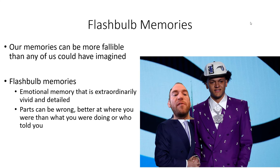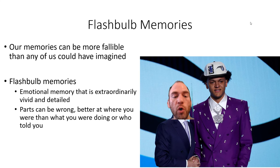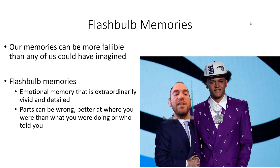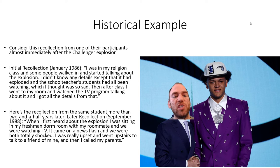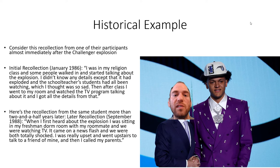Flashbulb memories are vivid, detailed, emotional memories — but they can be more fallible than imagined. Classic examples include the Challenger Space Shuttle explosion in the 1980s and September 11, 2001. Parts can be wrong: you're better at remembering where you were than exactly what you were doing or who told you. In one study, researchers asked participants about their memories of the Challenger explosion shortly after it occurred versus two and a half years later — and the differences in how those memories changed were notable.